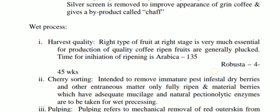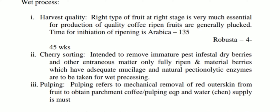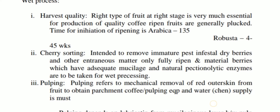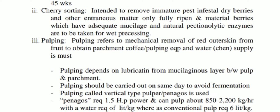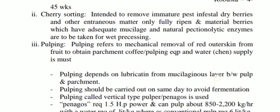Now wet processing. Harvesting quality is important because it is a commercial process — quality fruit should be harvested. Standards for harvesting require that Arabica should be 135 weeks old and Robusta 4 to 45 weeks before being plucked. Cherry sorting is done to meet these standards, ensuring fully ripened berries with all content intact.